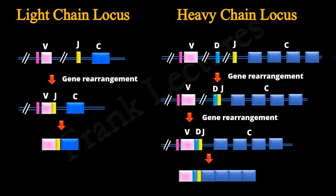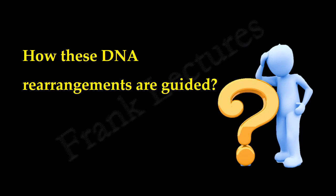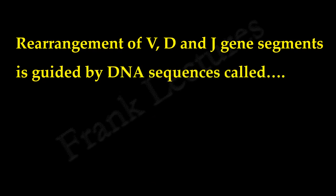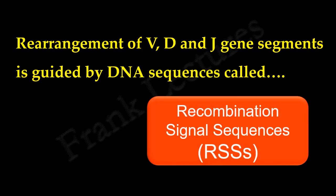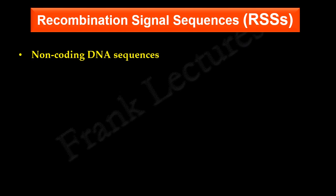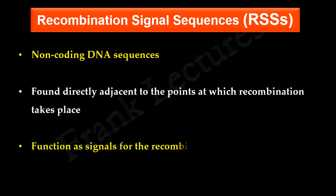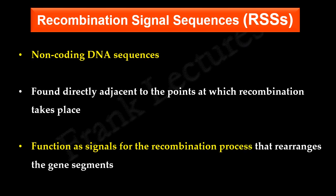For VDJ recombination, it is very important that the DNA rearrangements take place at the correct locations. In this video lecture, we will find out how these DNA rearrangements are guided. Rearrangement of V, D, and J gene segments is guided by DNA sequences known as Recombination Signal Sequences, abbreviated as RSS. These are non-coding DNA sequences found directly adjacent to the points at which recombination takes place, and they function as signals for the recombination process that rearranges the genes and gene segments.